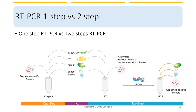There are two ways to set up an RT-PCR reaction. In the one-step setup, the messenger RNA, primers, reverse transcriptase, DNA polymerase, buffer, and dNTPs are all in one PCR tube, and everything is completed at once. In the two-step reaction, reverse transcription is first performed, and the cDNA is isolated for the following PCR reaction.